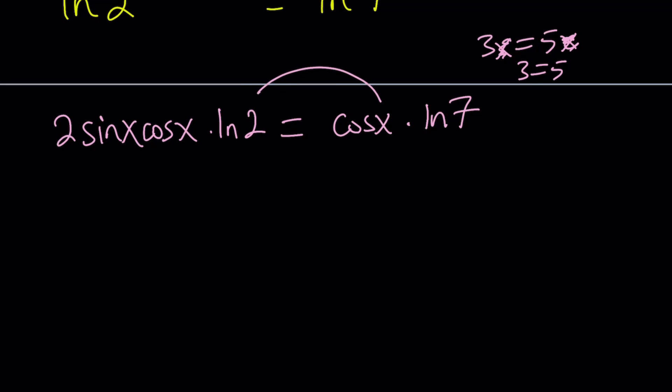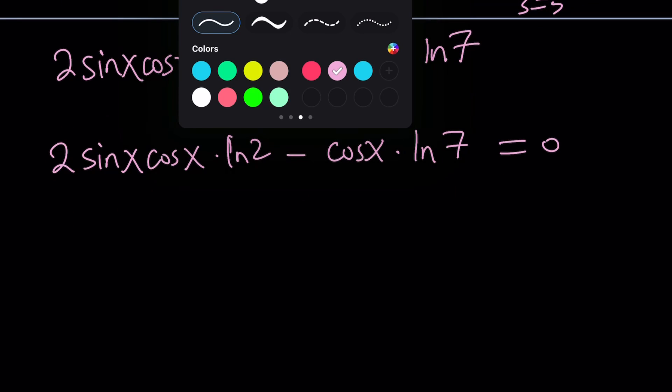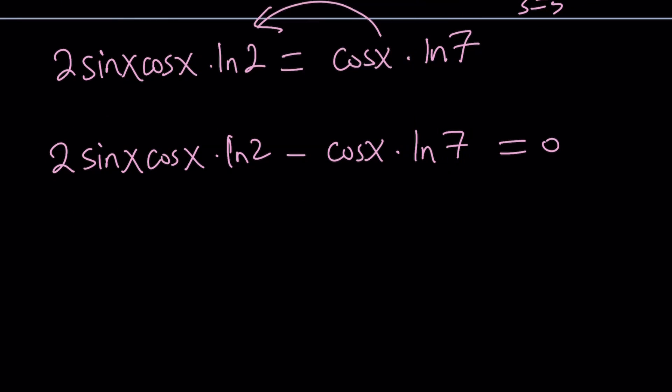So we have to do something else. Subtract from both sides: 2 sine x cosine x times ln 2 minus cosine x times ln 7 equals 0. Great. Now we can take care of the common factor, cosine x. We can actually take it out now. Cosine x multiplied by 2 sine x times ln 2. By the way, this is probably better if you write it as 2 ln 2 sine x because 2 ln 2 is a constant, the coefficient of sine x, minus ln 7.